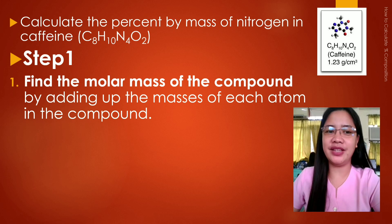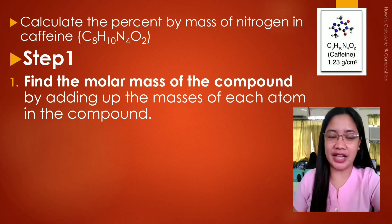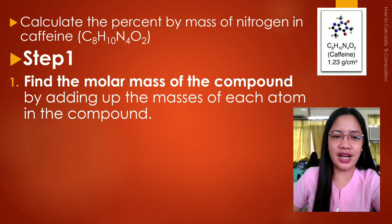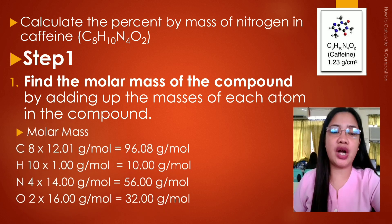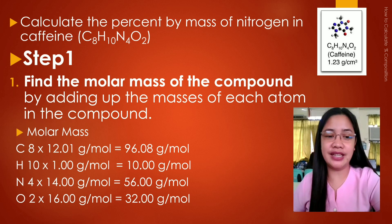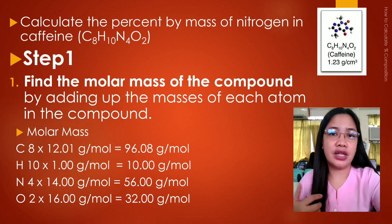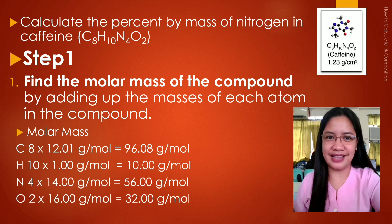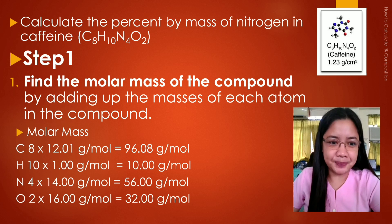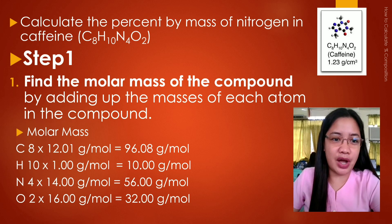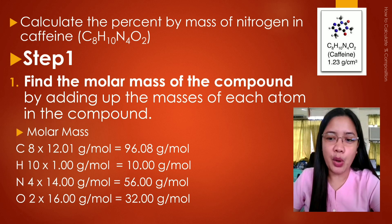Remember step number one: find the molar mass of the compound by adding up the masses of each atom in the compound. We will start by identifying the elements in the compound — we have carbon, hydrogen, nitrogen, and oxygen. Then we are going to identify how many atoms of each element are in the compound and multiply it by its atomic mass. For our example, we have eight atoms of carbon, 10 for hydrogen, four for nitrogen, and two for oxygen.